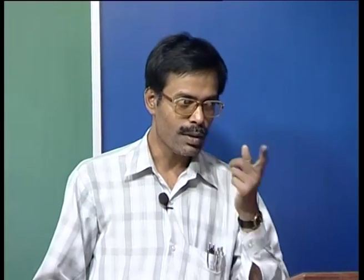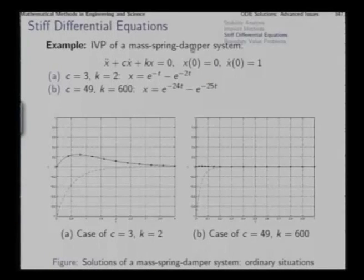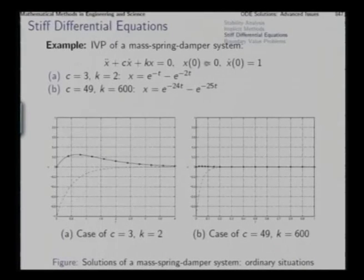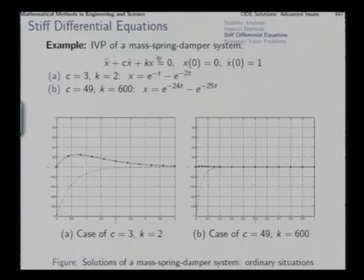Today we will first see that with the help of an example. Consider this initial value problem of a mass-spring-damper system. Here C is the damping coefficient and k is the stiffness, and mass is unity. These are the initial conditions: initial position is 0 and initial speed is 1. We will consider this system for 3 cases of the coefficients C and k.